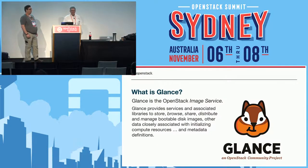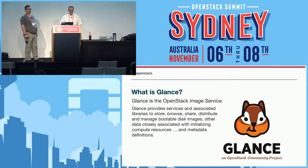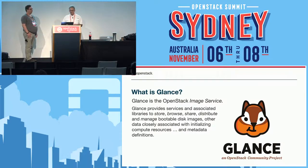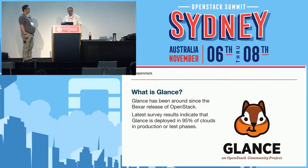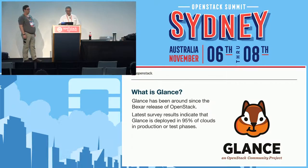So what is Glance? Glance is an OpenStack image service. It provides services and associated libraries that allow you to store, browse, share, distribute, and manage your bootable disk images, and some other data closely associated with initializing compute resources. We also store metadata definitions that various services consume. Glance has been around since Bexar, way back at the beginning of OpenStack, and the latest survey results show it's deployed in 95% of clouds in production or test phases.